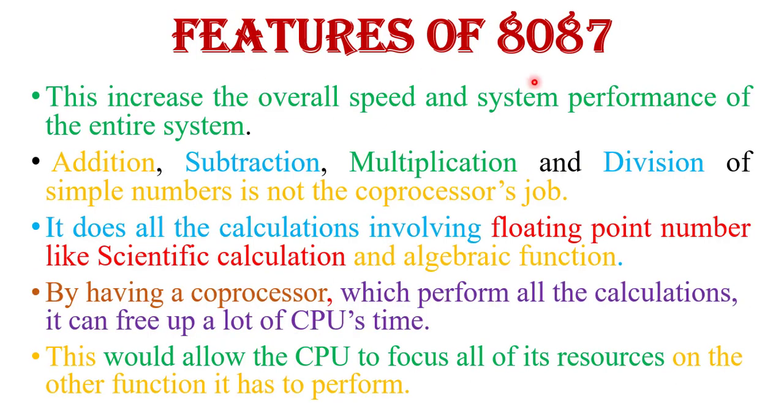Now features of 8087 coprocessor. 8087 coprocessor is designed to increase the overall speed and system performance of entire system. Addition, subtraction, multiplication, division of simple numbers is not the coprocessor's job.